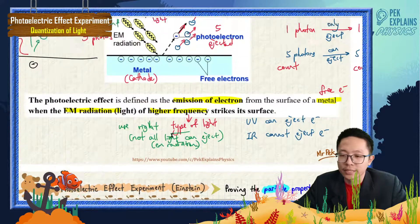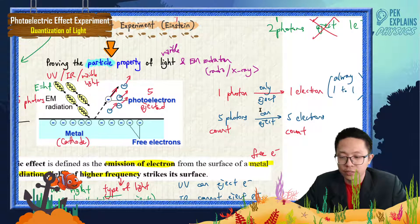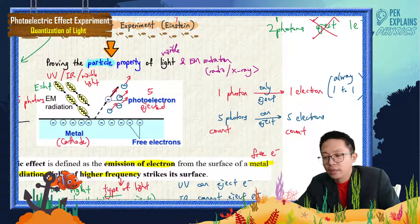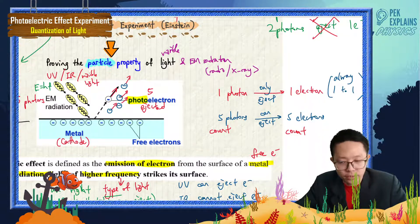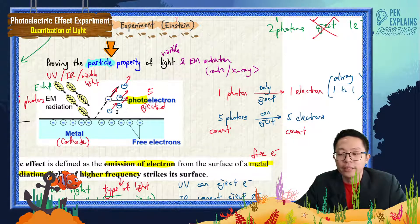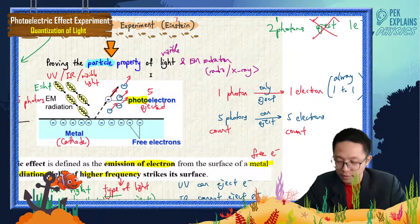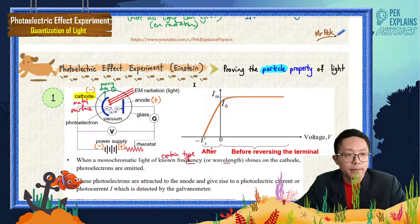When light shines on the cathode, it ejects electrons. One photon only ejects one electron. If there are five incident photons coming, it will eject five electrons. When electrons are ejected, they are called photoelectrons because each electron receives the photon energy, becomes energetic, and is ejected.